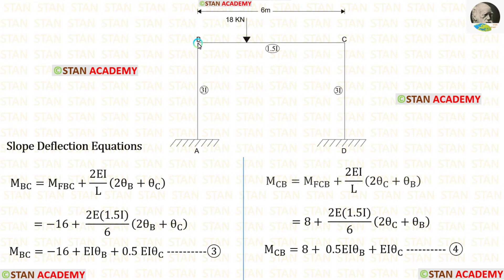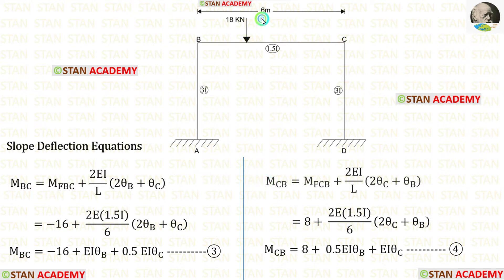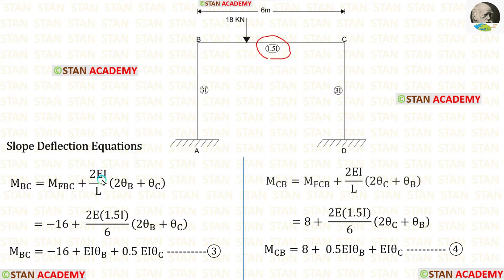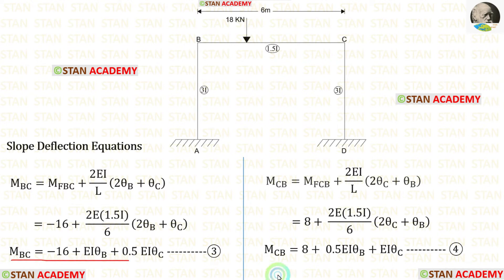Now let us make the slope deflection equations for beam BC. In the equations, first let us apply the fixed end moments. The length of BC is 6 m. The moment of inertia for BC is 1.5i, so instead of i we apply 1.5i. Finally, in beam BC we have made 2 equations.